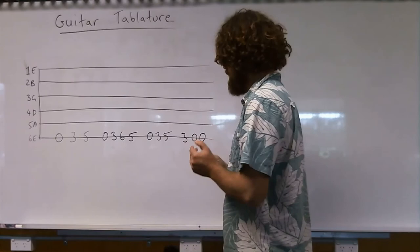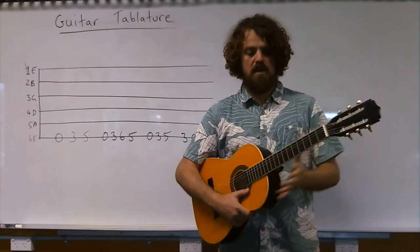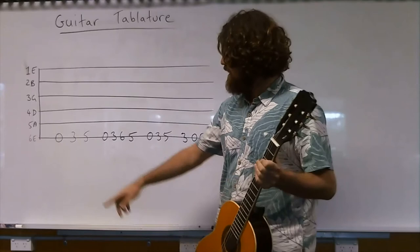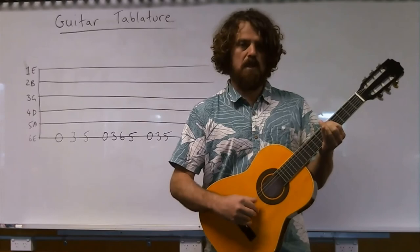Just a reminder: when you see zero it means you don't press down anything with your left hand, you just pluck the string open. A three means we go to the third fret — one, two, three — press down. Five means we go to the fifth fret — one, two, three, four, five — press down the fret and pluck the string.